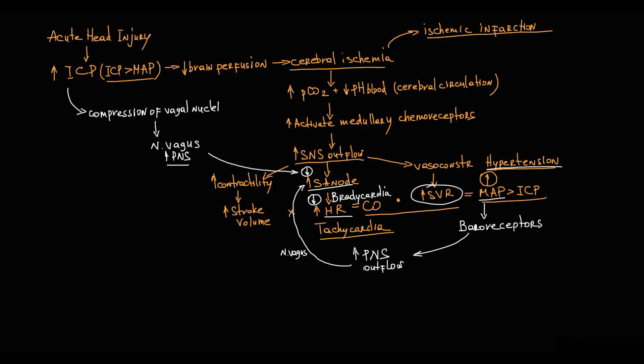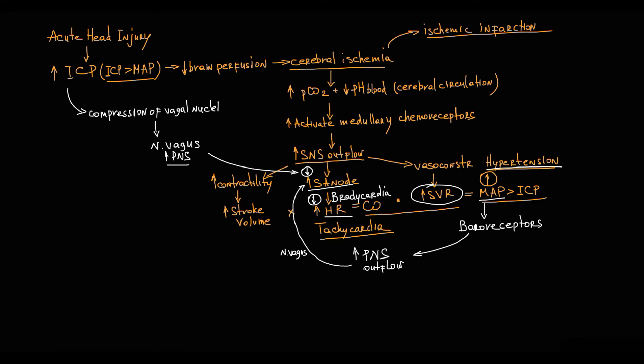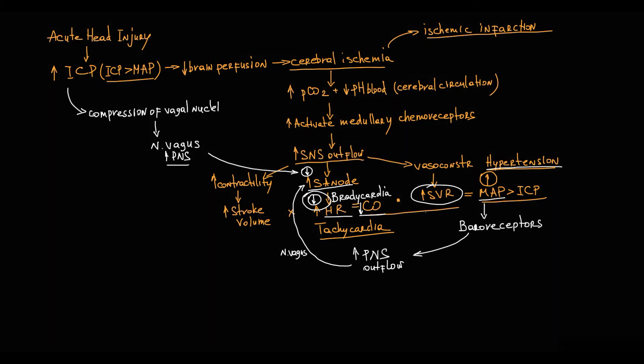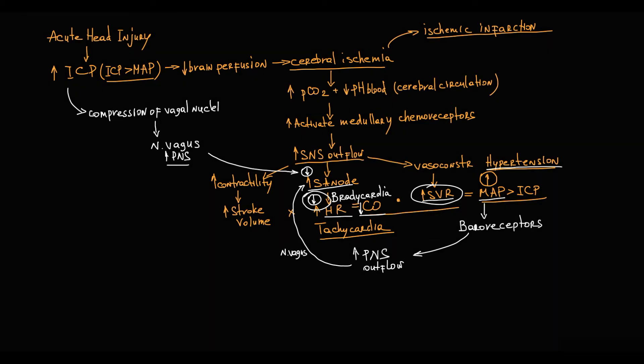Interestingly, hypertension remains due to the increase in systemic vascular resistance. This is because if mean arterial pressure becomes lower than intracranial pressure, arterioles become compressed and blood flow to the brain decreases. Since heart rate decreases, cardiac output also decreases, so the only component that can maintain high blood pressure values is systemic vascular resistance.